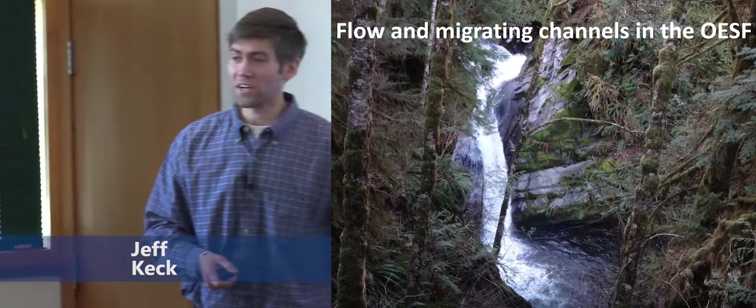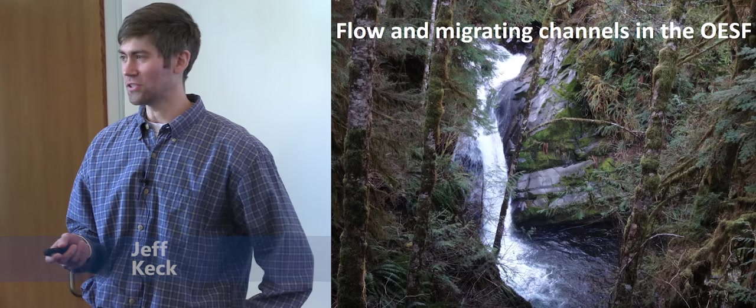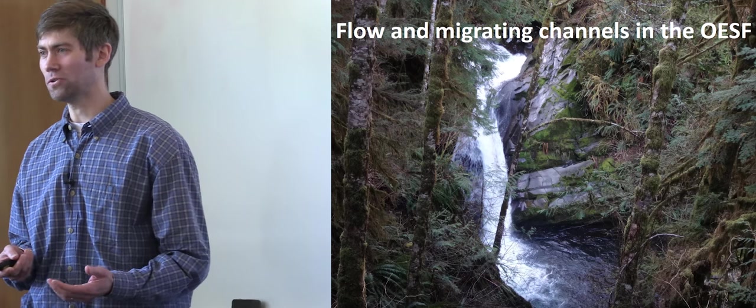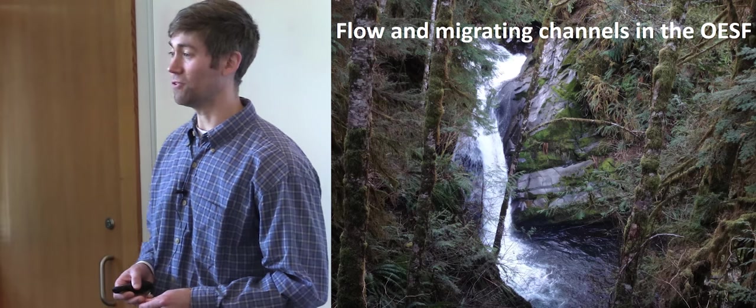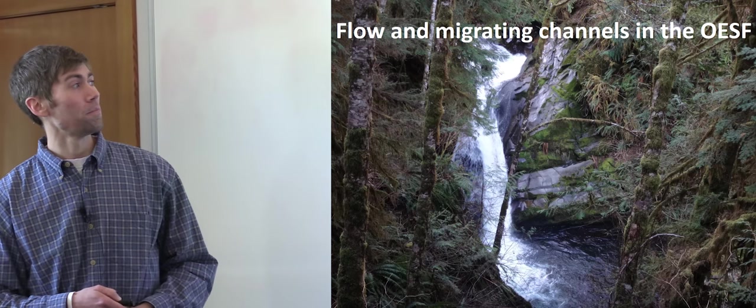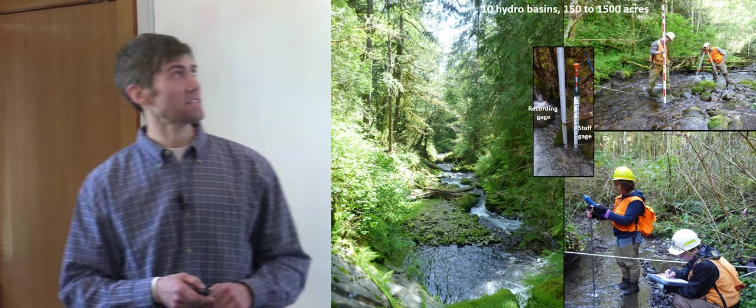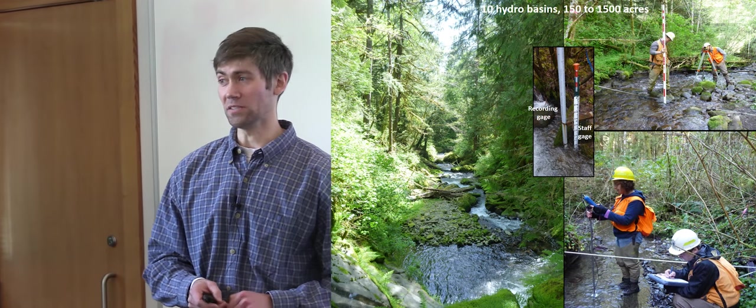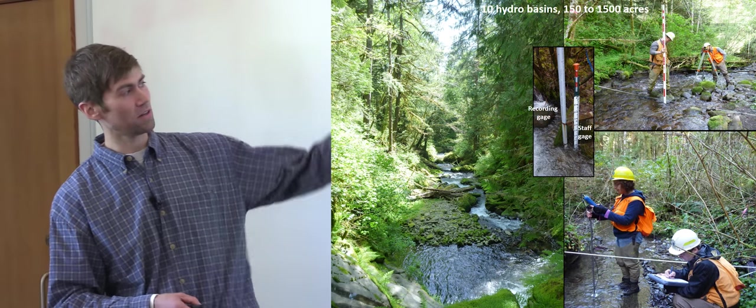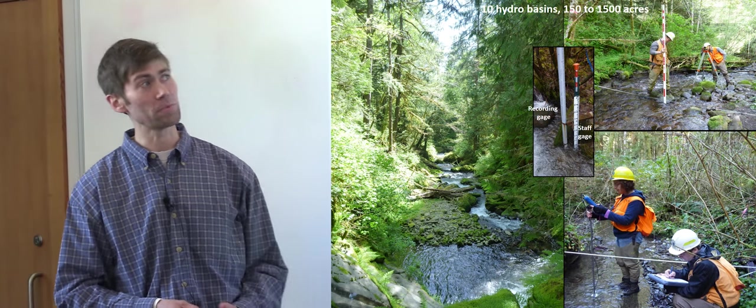Okay, so Warren just talked about how temperature is varying in the basins, and there was a question about how that might vary with flow. So I'm going to now talk about flow observations in the OSF. We're looking at just 10 of those 54 basins, and this is sort of what a number of our basins look like and the information we're collecting.